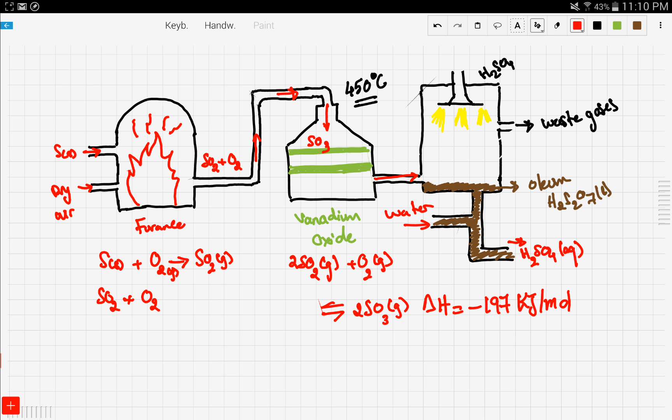I know this is a bit too much, but let's go over it again. Sulfur solid is passed through a furnace with some dry air, and this yields sulfur dioxide gas. Sulfur dioxide gas is then passed on with some oxygen onto a catalytic vessel that has vanadium oxide.